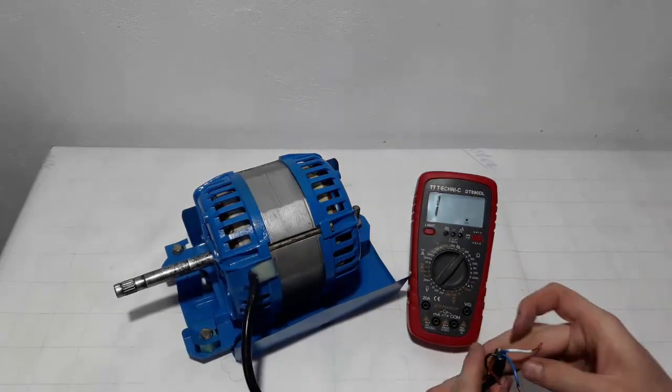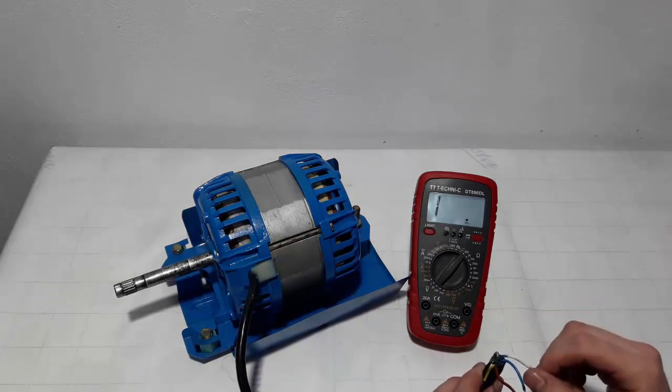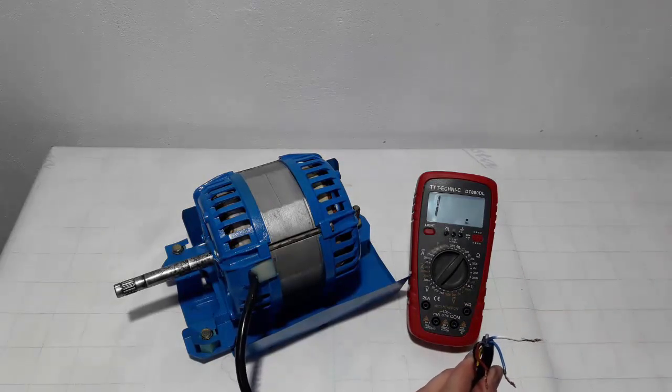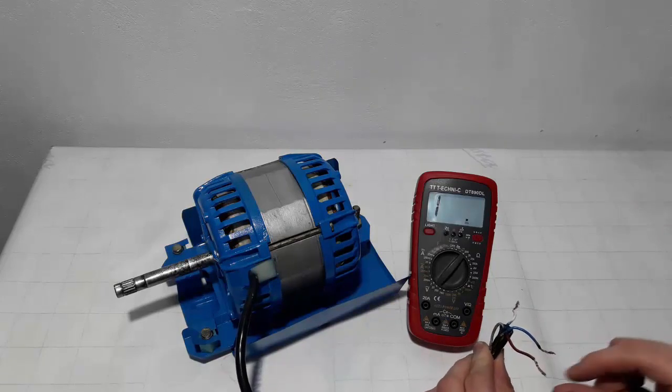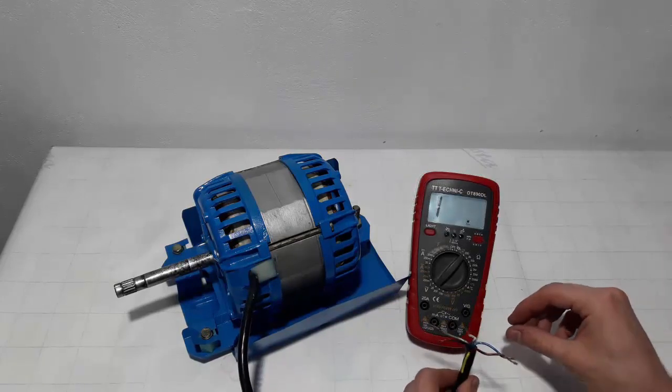To check: the resistance between the common and the low speed wires must be equal. However, the resistance between the common and the high speed wires shouldn't be equal.